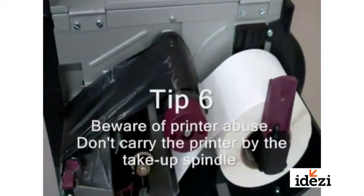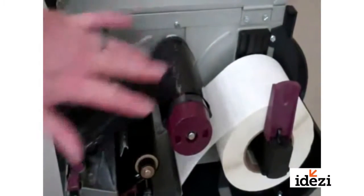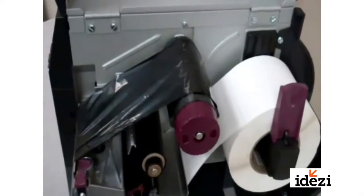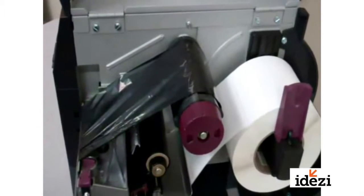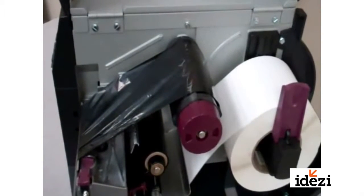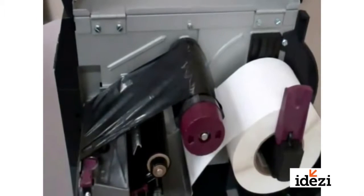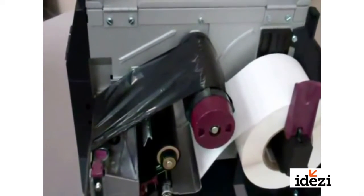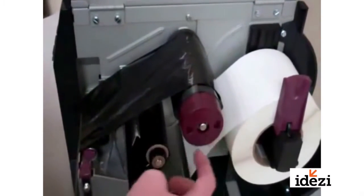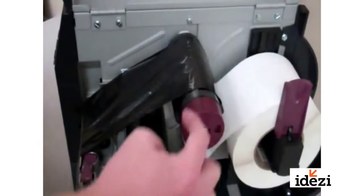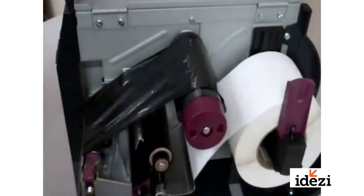If you carry your printer with the spindle, what will happen is it will bend the frame. It will also bend the spindle inside the take up spindle or the supply spindle, whichever one you happen to be carrying it by. And when it bends like that, it's always going to cause a ribbon wrinkle because now instead of turning nice and round, you get this oblong wobble effect in your spindles.